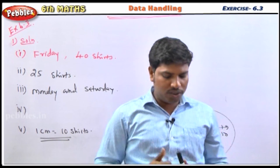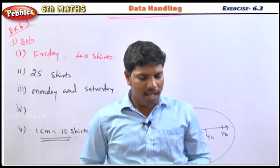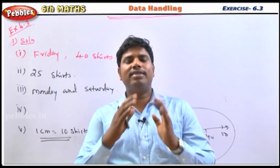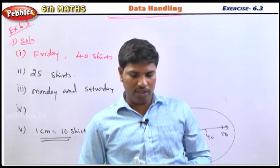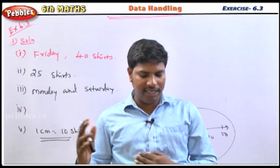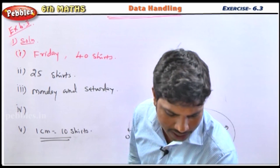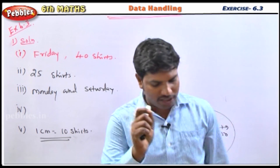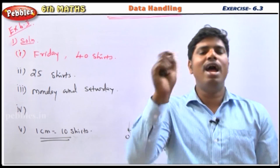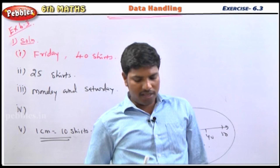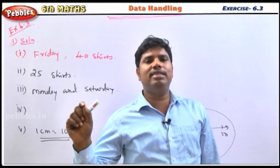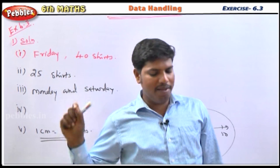The second question: how many marks did the student score in Science? Looking at the Science bar in the diagram, the Science score is 90 marks. The student scored 90 marks in the Science subject.